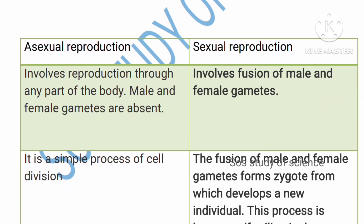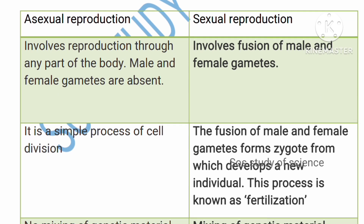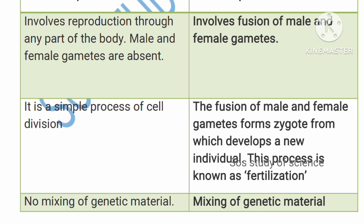Asexual reproduction involves reproduction through any part of the body — you have seen regeneration, fragmentation, and binary fission in organisms like amoeba and plasmodium. Male and female gametes are absolutely absent in asexual reproduction. Sexual reproduction involves the fusion of male and female gametes. Asexual reproduction is a very simple process where cell division takes place easily.